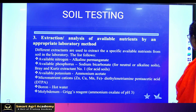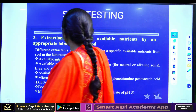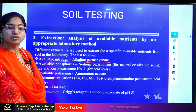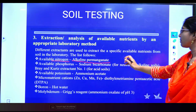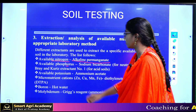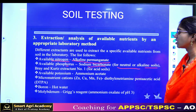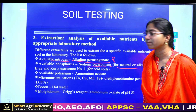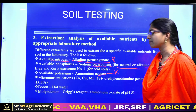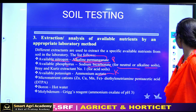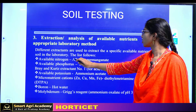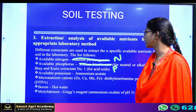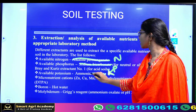Soil testing is most important. There are many questions in exams about different extractants for soil testing. For available nitrogen, we use the alkaline permanganate method. For available phosphorus, we use sodium bicarbonate for neutral or alkaline soils. For available potassium, we use ammonium acetate.